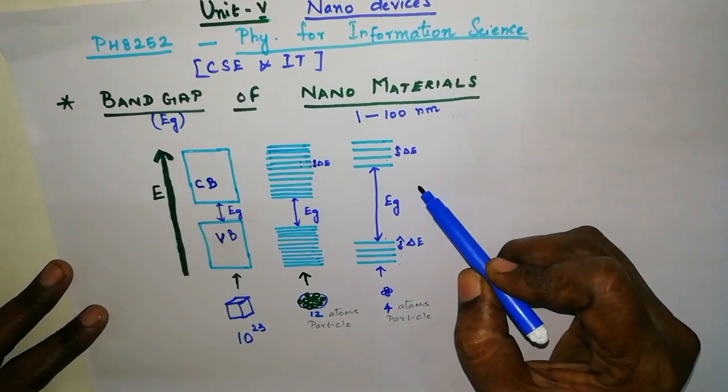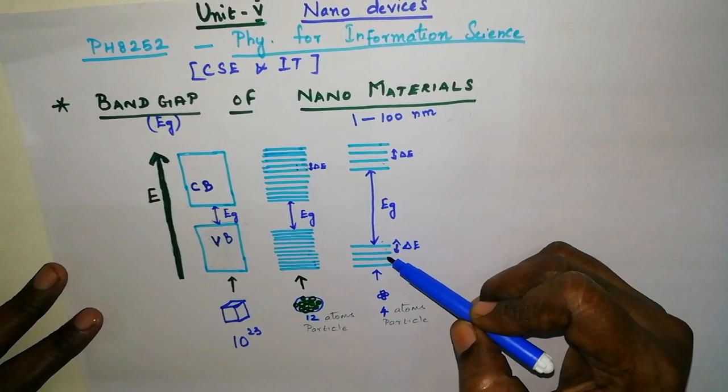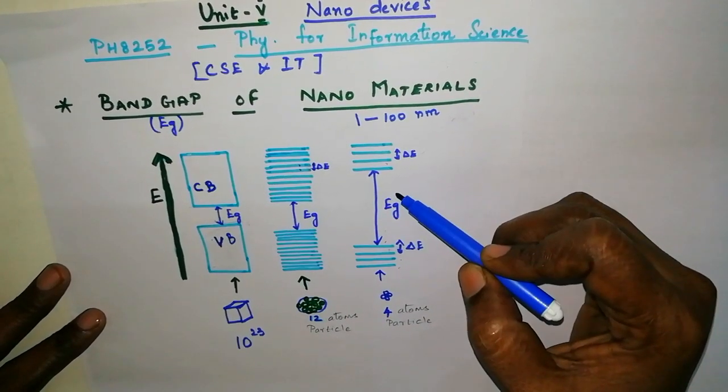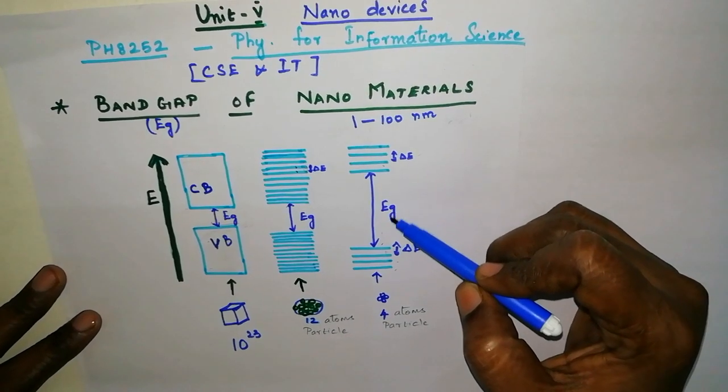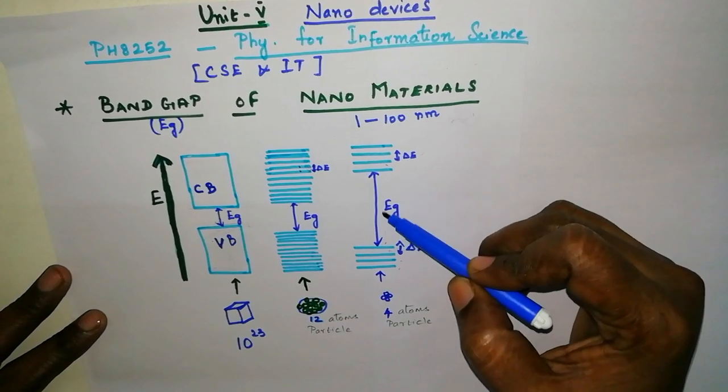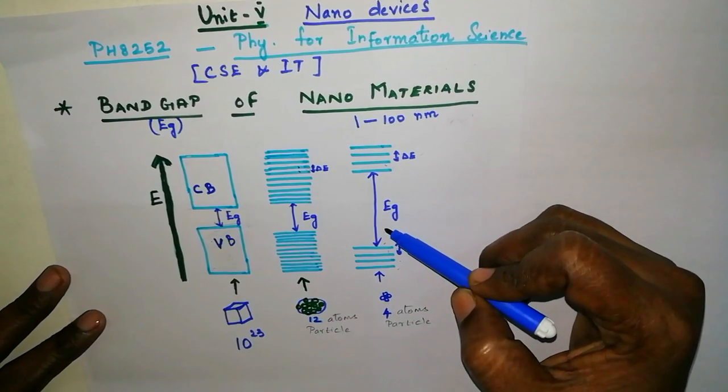Due to quantum confinement effect, the electrons and holes are confined in semiconductors in the nanoscale especially. The energy difference between the filled state and the empty states increases or widens the band gap of semiconductors.